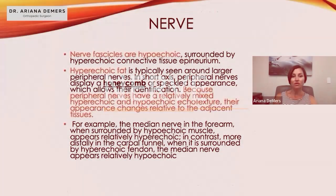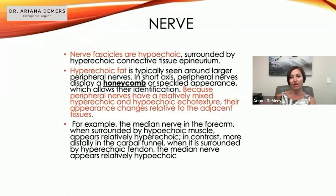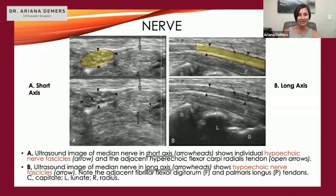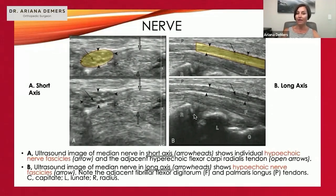Next is nerve. Nerve fascicles are hyperechoic, surrounded by hyperechoic fat, and they display a honeycomb or speckled appearance due to the mixture of hyper- and hypoechoic elements. Here we see the median nerve in short axis or cross-section, and also in long axis — you can see the beautiful honeycombing. Next to it is a tendon, but that honeycomb hypo- and hyperechoic texture is characteristic of the median nerve. Nerves differ from the fibrillar texture of tendons or ligaments, though on long axis view it can be difficult to tell the difference.